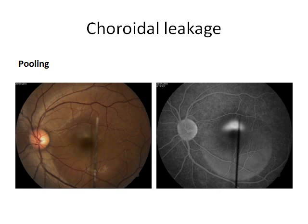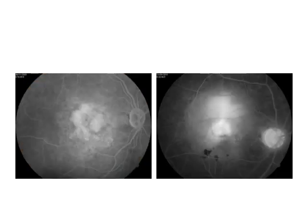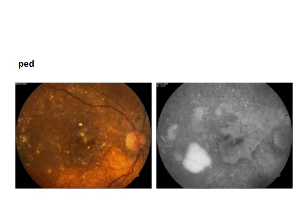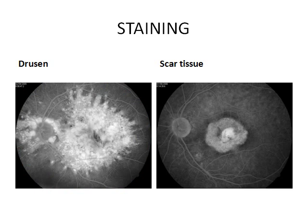Pooling is defined as leakage of fluorescence in a distinct anatomic space. In CSR, the pooling of dye under the sensory retinal detachment takes place slowly, whereas if the leakage is from a choroidal neovascular membrane, it is profuse and complete. The pooling under a PED extends to the edges of the detachment and makes the entire detachment and its margin hyperfluorescent and clearly visible. Staining is leakage of dye into the tissue or material. Drusen display late hyperfluorescence due to staining; the larger the drusen, the more likely they will retain the fluorescence and staining will occur. Scar tissue retains fluorescence and demonstrates well-demarcated hyperfluorescence.